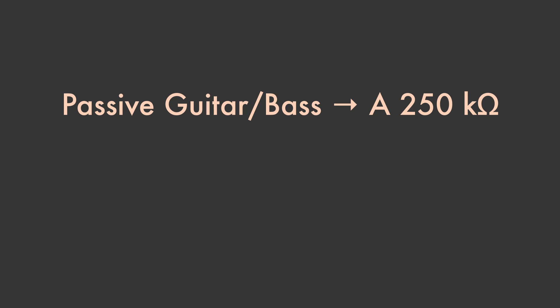A 250 kilo ohm pot matches well with passive instruments. If you're using an active guitar or want to use the passive volume pedal between effects you want to use a 50 kilo ohm audio taper pot.